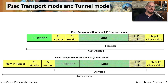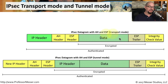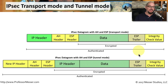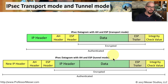In most IPsec implementations, you're not only using ESP for encryption but also using the Authentication Header at the same time. This means you can have encrypted data inside your packet while also authenticating the entire IP packet. This can be done in either transport mode or tunnel mode, ensuring that your traffic is not only protected and encrypted, but that you can also be assured it is exactly what was sent by the original station.